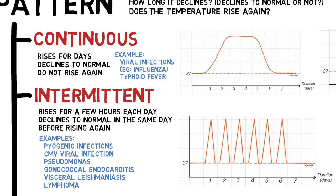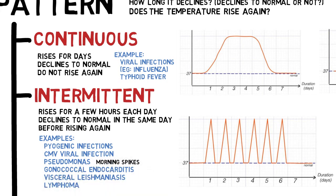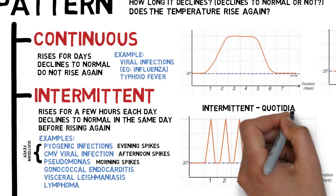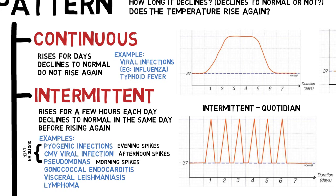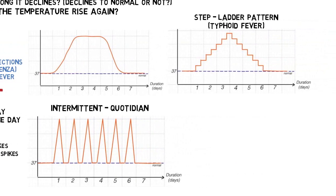To elaborate further, some organisms tend to cause fever spikes during different hours of the day. Pseudomonas infection tends to cause morning spikes, cytomegalovirus infection causes afternoon spikes, while evening spikes are suggestive of pyogenic infection. If the spikes occur once daily, it can also be described as quotidian fever. Two fever spikes in a day are called double quotidian fever, seen in gonococcal endocarditis and visceral leishmaniasis.